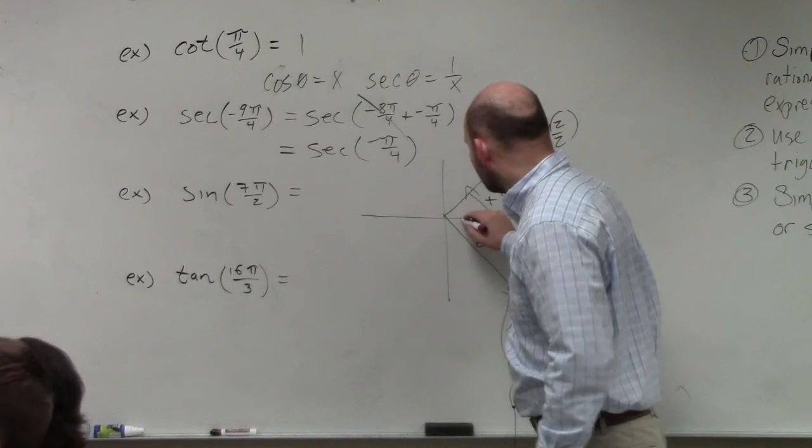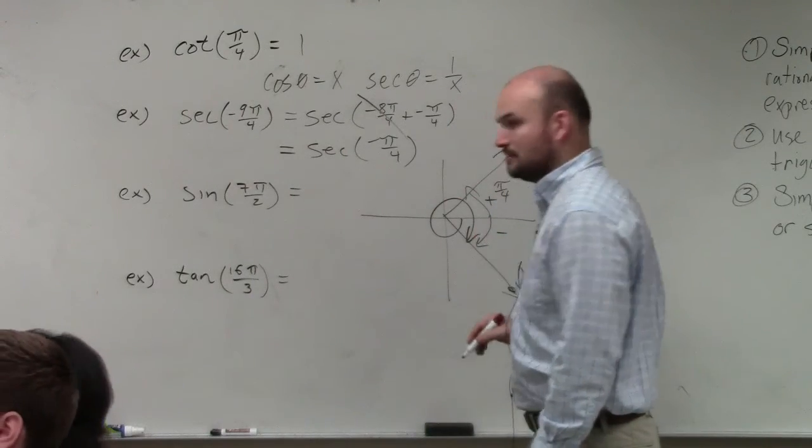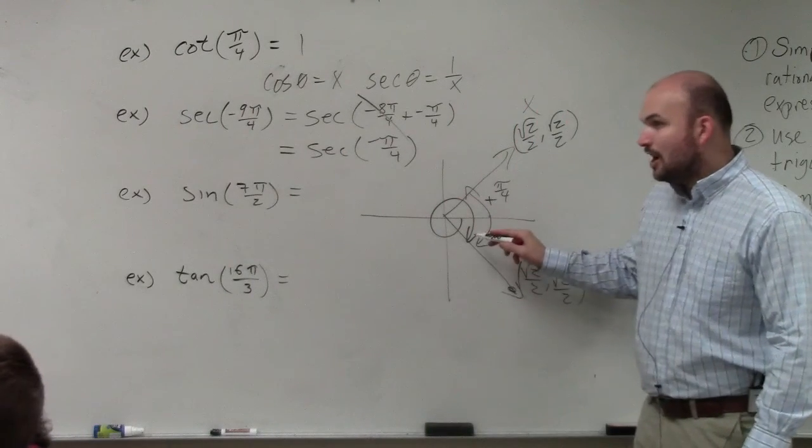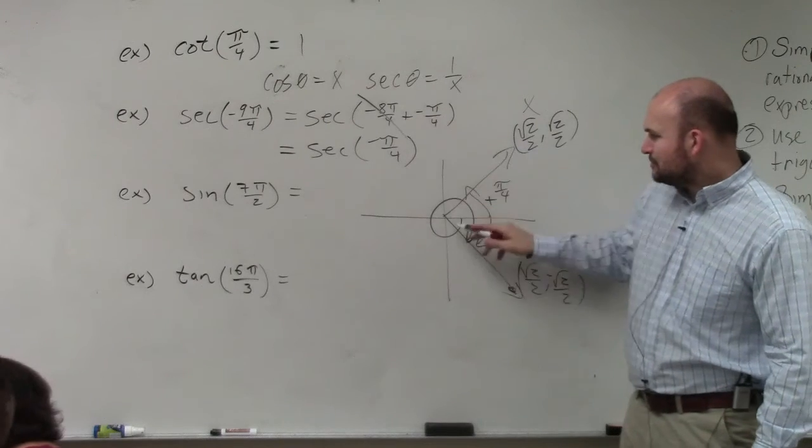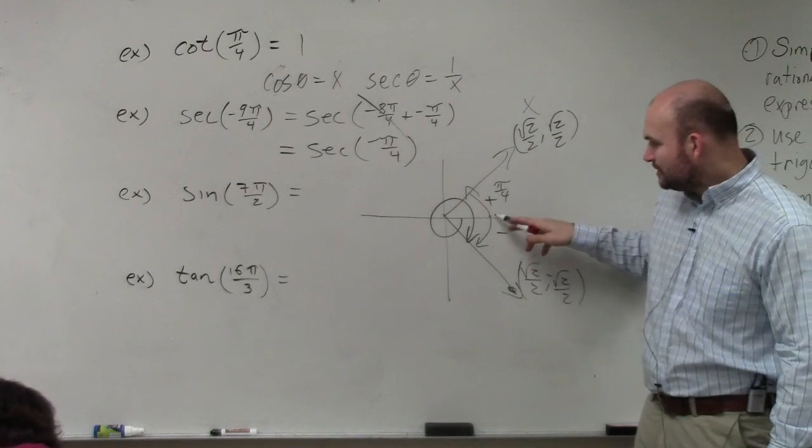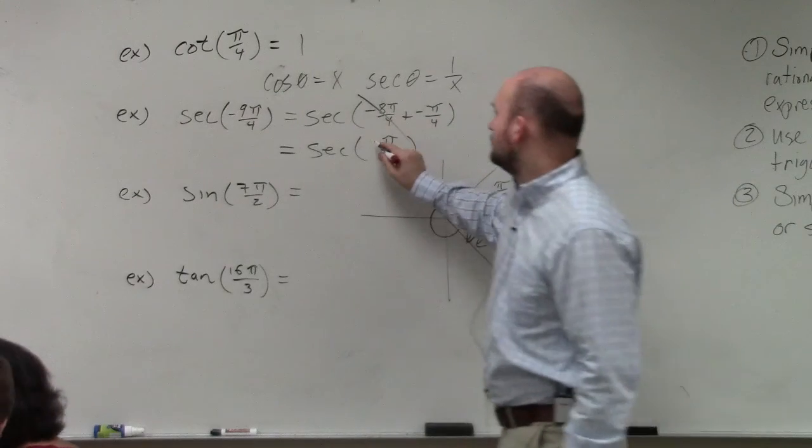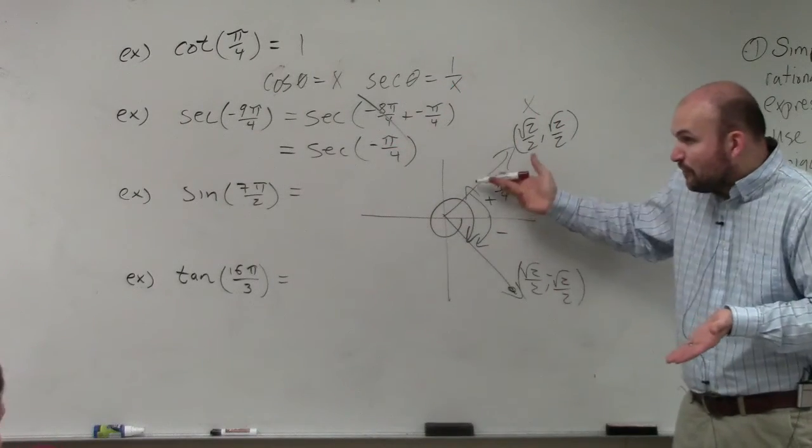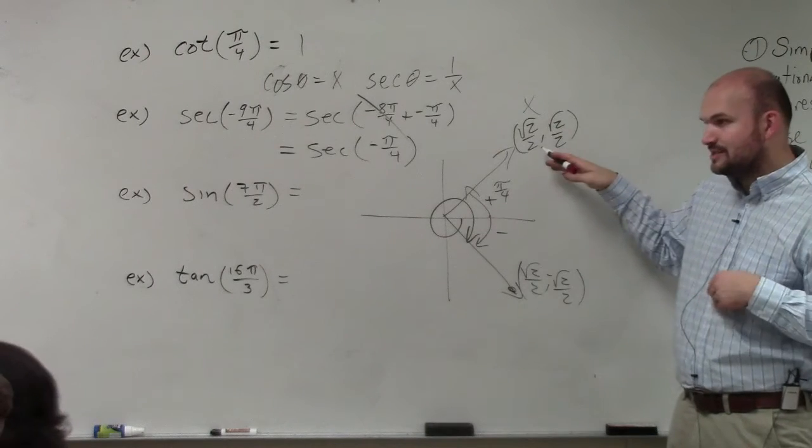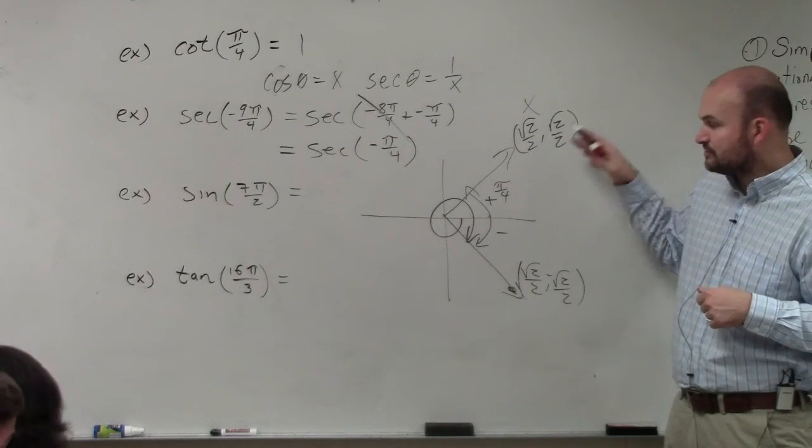-9π/4 guys looks like this. That's -9π/4. All I'm saying is get rid of 2π. We don't need to go around the circle. You can just do -9π/4 or -π/4. So I know that π/4, based on my unit circle, has the coordinate point √2/2, √2/2.